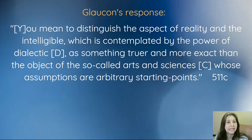Here's the first point. He says, you mean to distinguish the aspect of reality and the intelligible which is contemplated by the power of dialectic as something truer and more exact than the object of the so-called arts and sciences, whose assumptions are arbitrary starting points. In other words, Glaucon is suggesting that the objects of C are different from the objects of D. It's not just that our understanding or the power of our cognitive functioning is different. It's not the same object at a different power, but rather they are actually different objects. So you have to decide, do you think that is correct or not?